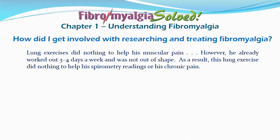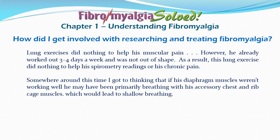He purchased a breathing product that required him to inhale and exhale with increased force — a product for athletes who want to increase lung capacity. However, he already worked out three to four days a week and was not out of shape. As a result, this lung exercise did nothing to help his spirometry readings or his chronic pain. Somewhere around this time, I got to thinking that if his diaphragm muscles weren't working well, he may have been primarily breathing with his accessory breathing muscles — his chest and ribcage muscles — which would lead to shallow breathing.